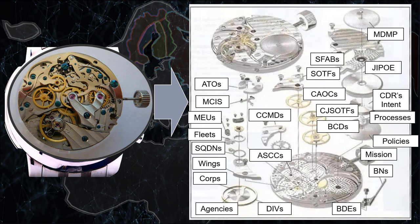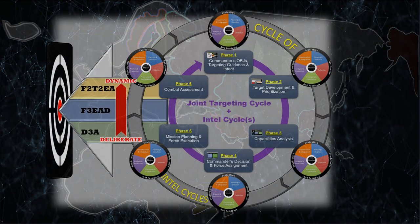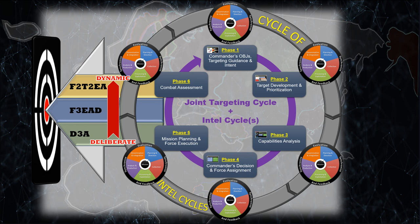And here we have it — the joint targeting cycle, enveloped by the cycle of intel cycles, allowing intel to support operations, ISR, and targeting. Within the joint targeting cycle, we have these phases and their subcomponents.